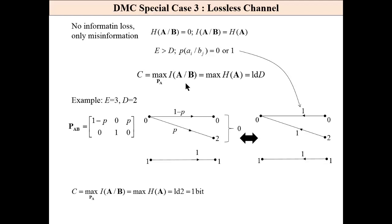Next special case is lossless channel. There is no information loss, only misinformation. This is an exemplary channel. In such case, the capacity is ld of the length of input alphabets. And actually, we have no loss of information. So, it is nearly an ideal channel. For binary channel, it is 1 bit.